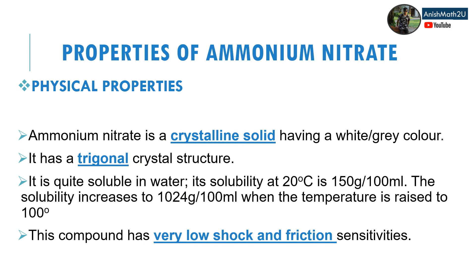Properties of ammonium nitrate: physically, it is a crystalline solid with a white or gray color. It has a trigonal crystal structure and is quite soluble in water. Its solubility at 20°C is 150 grams per 100 milliliters, increasing to 1024 grams per 100 milliliters at 100°C. This compound has very low shock and friction sensitivity.